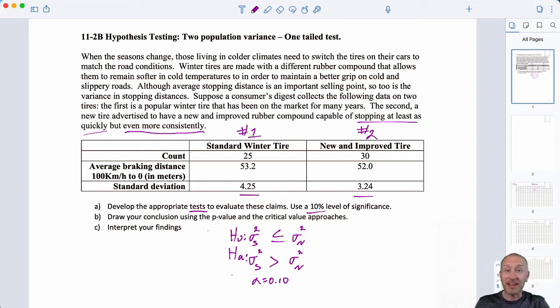So, again, justify our test. I formulated the test this way so that if the evidence supports the alternative hypotheses, we do have evidence to show that the manufacturers have succeeded at developing a tire that does indeed stop more consistently than the standard. If the evidence supports the null hypotheses, then unfortunately we are unable to make that claim. The variance of stopping distance or the consistency of stopping distance is at most the same as the standard, if not worse, if not less consistent.